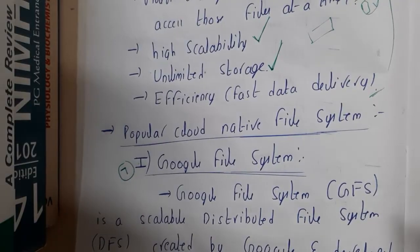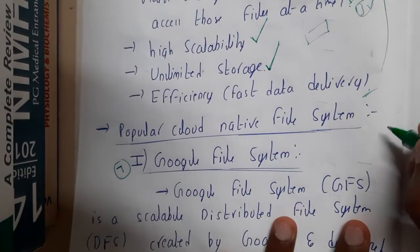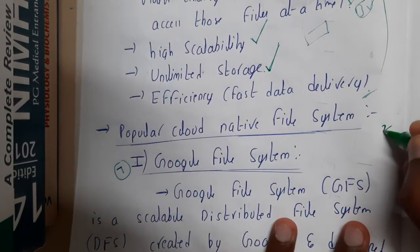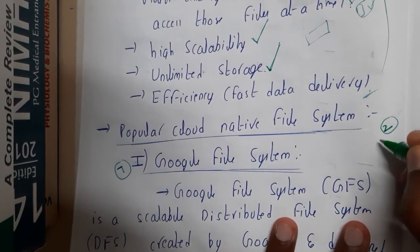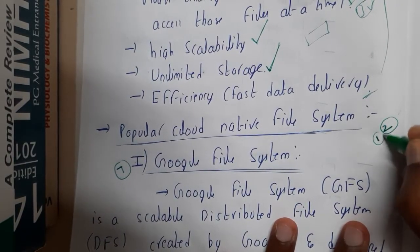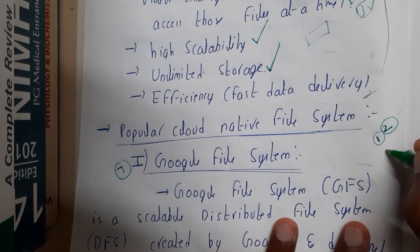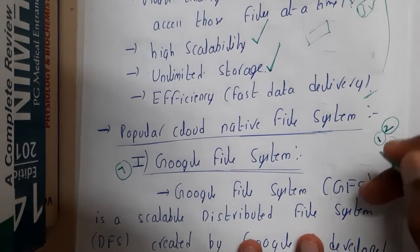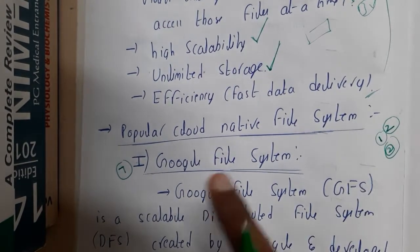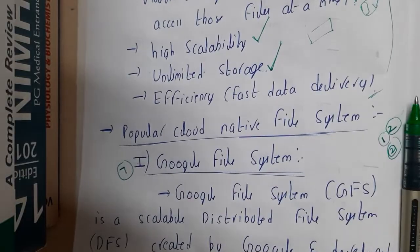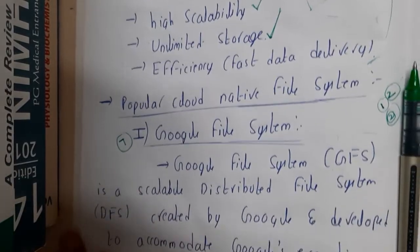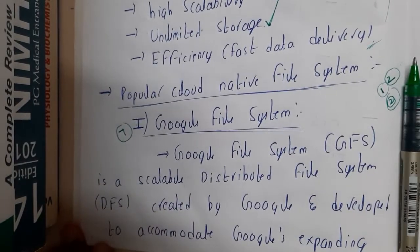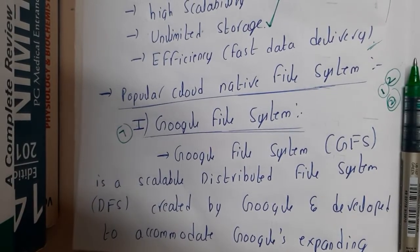In the next lecture, let us discuss the Google File System. There are two popular file systems: the first one is GFS, that is the Google File System, and the second one is Hadoop. In the next lecture, we'll be discussing about the Google File System. Thank you for watching.